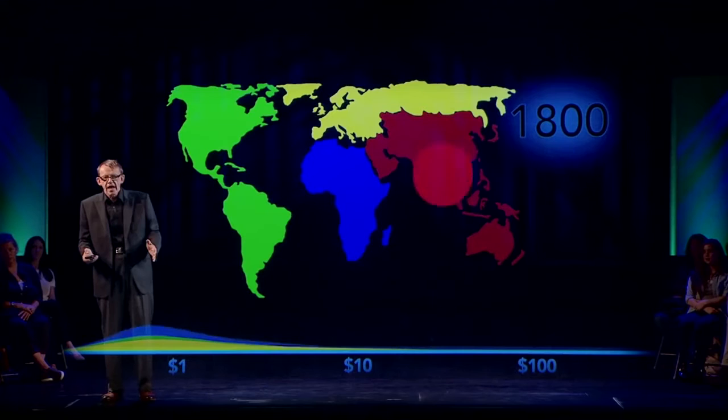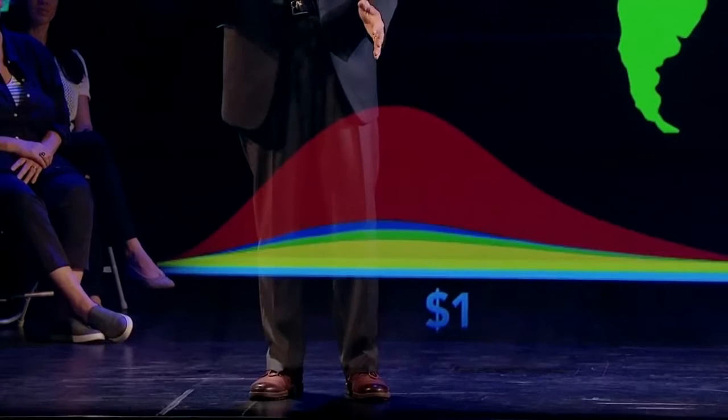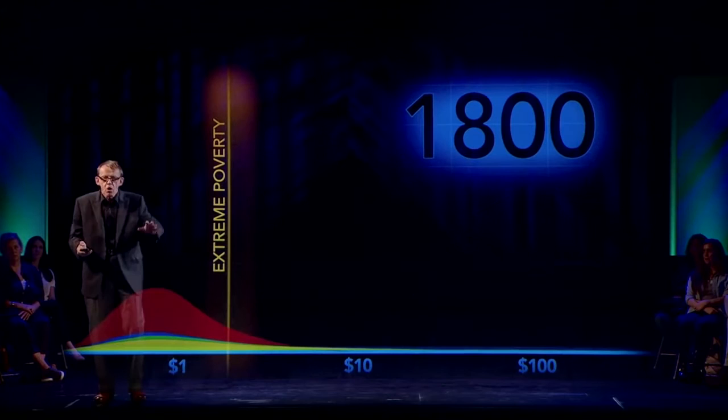Then the Americas on top of that, then Africa, and on top of it the most populous region — Asia, including Australia. And as I showed you before, almost all people there were living in extreme poverty, in all regions of the world.